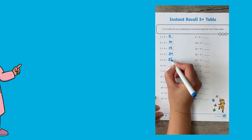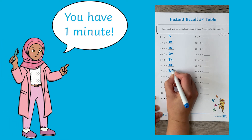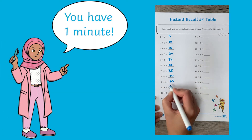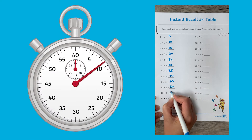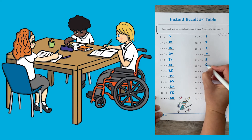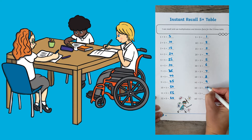When children become more fluent with their times tables, you could give them a certain amount of time to complete the sheet, or you could ask them to time themselves. Children could also race against one another or you to see how quickly they can finish.